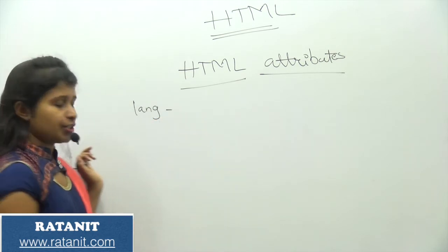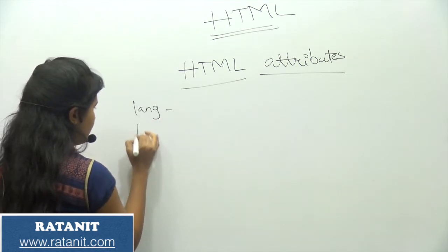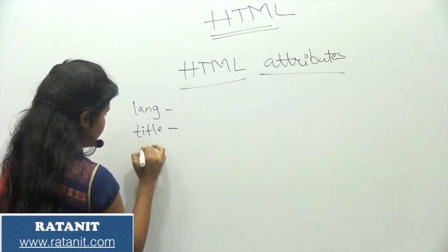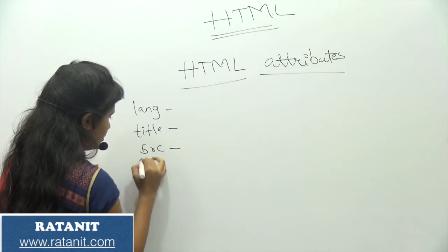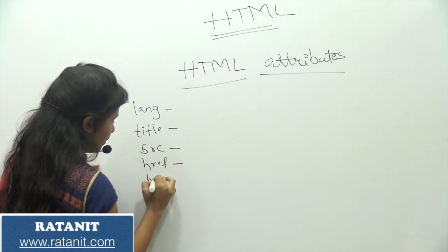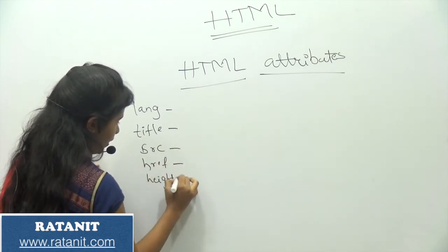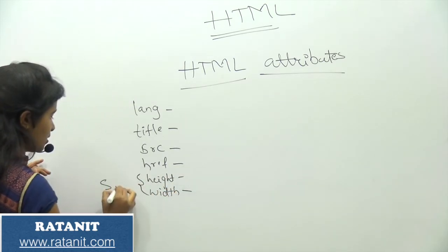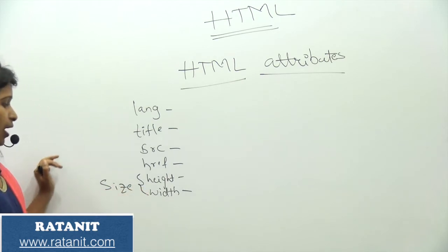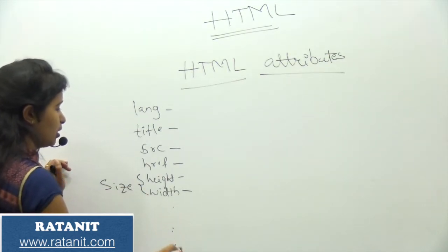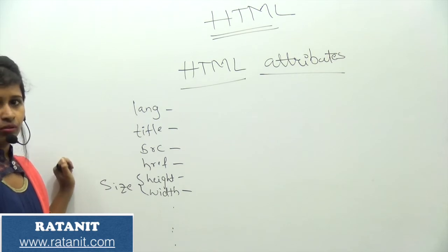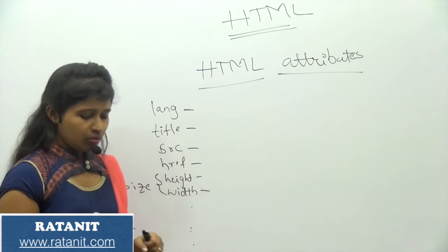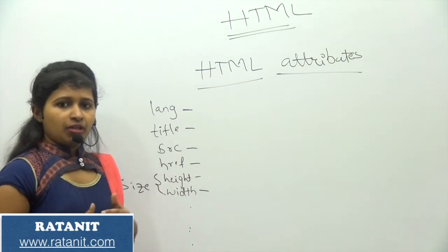I am having the language attribute, the title attribute, the source attribute, href attribute, and height and width attributes — I can also refer to those as size attributes. These are the basic things I am going to cover here.